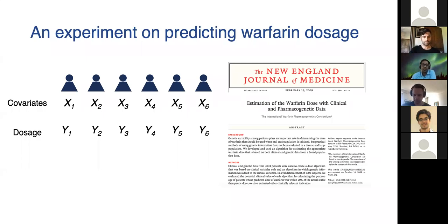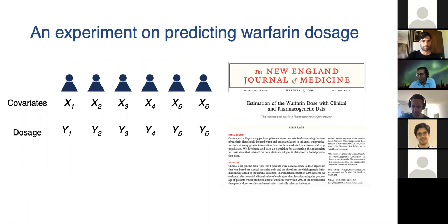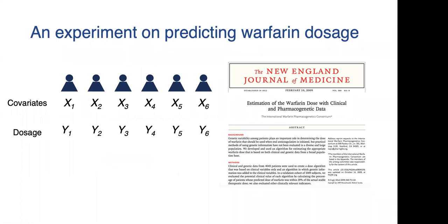Some people require very little of it, some people require a lot of it to get the therapeutic benefit. It's fairly difficult to compute the right dose and nurses and doctors spend a lot of time trying to compute the right dose for people. What they did was try and come up with a simple model that can do this prediction task.